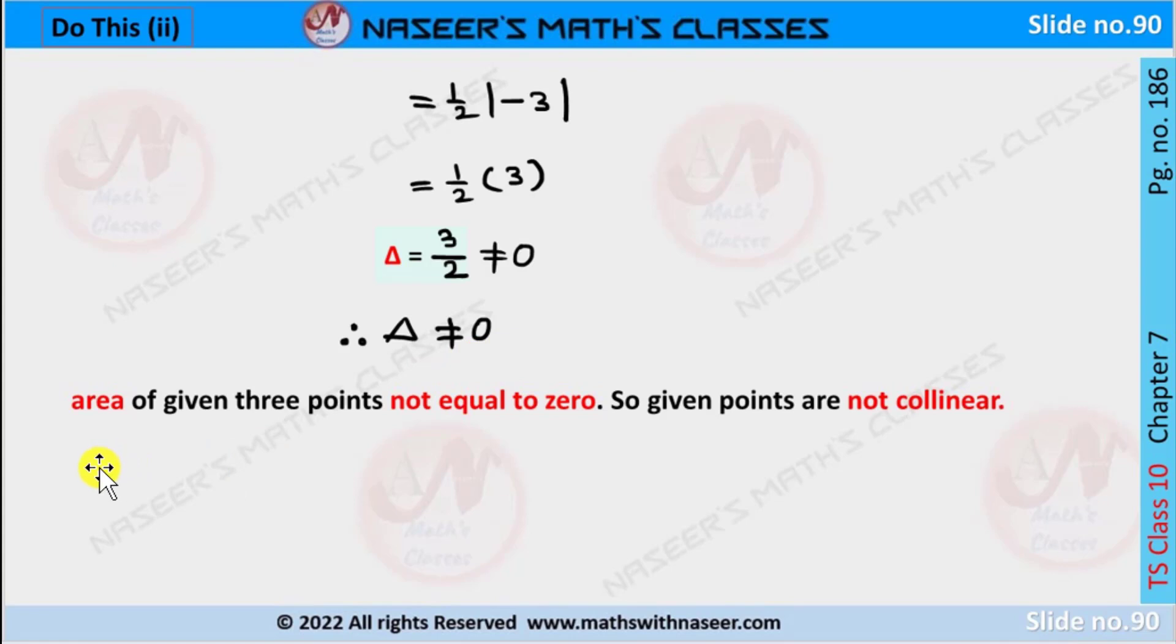Therefore, area of given three points is not equal to 0, so we can say that they are not collinear. They form a triangle ABC with the given ordered pairs; they are not on the same line segment.